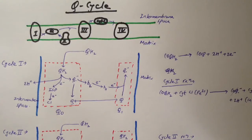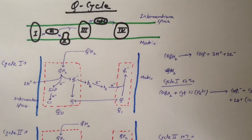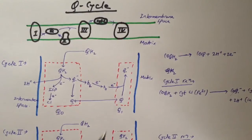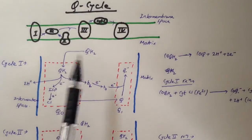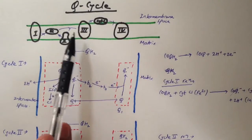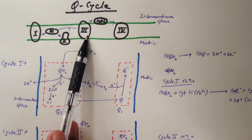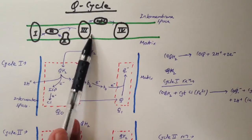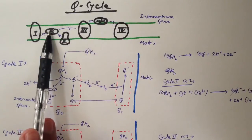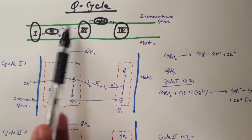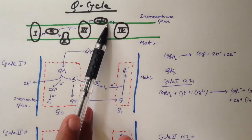Hi guys, in this video we'll talk about Q cycle. Q cycle is a series of reactions that happens in complex 3 of the electron transport chain, and it is responsible for transporting electrons carried by coenzyme Q to cytochrome C.